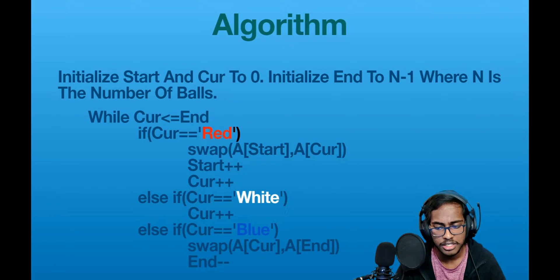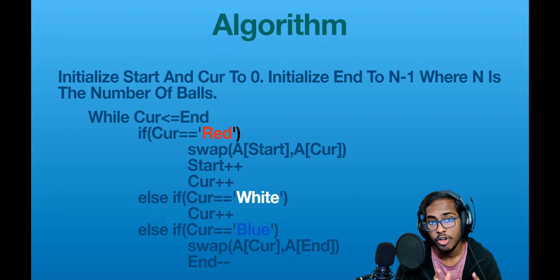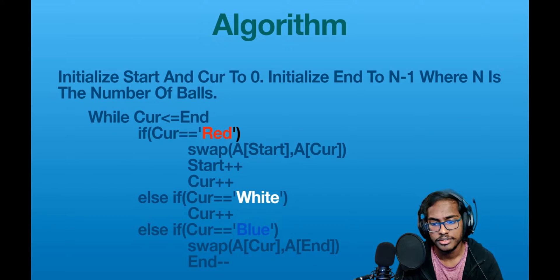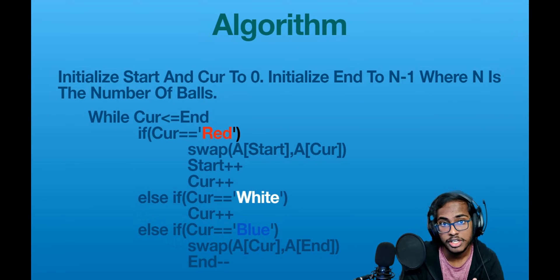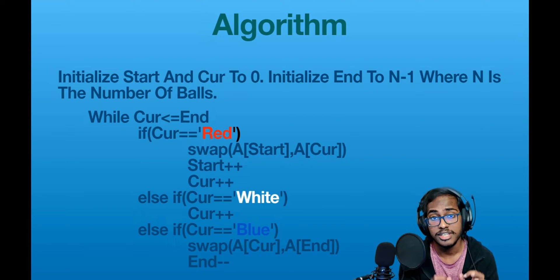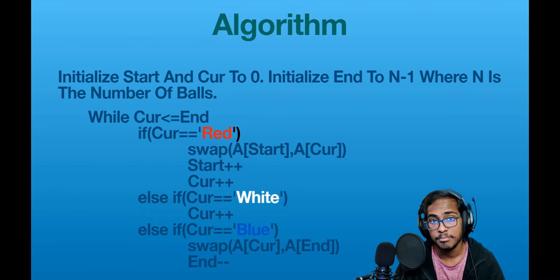The final case is if the ball cut is pointing to is blue. In this case, we swap the ball at cut with the ball at end, then decrement end. We do not increment cut, and there's a good reason for that. If the ball we swapped from the end to the cut position is a red or blue ball, incrementing cut would leave it in the center — which is not what we want. Everything to the right of the cut pointer is unknown, so we need to scan the element one more time before we increment cut.